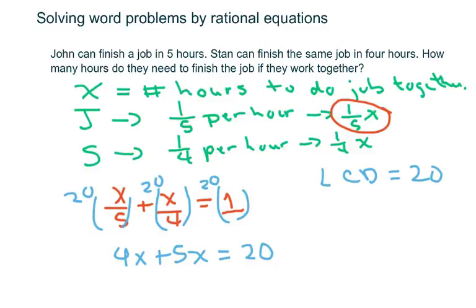So this equals 9X equals 20. So X equals 20 over 9, which is 2 and two ninths hours.